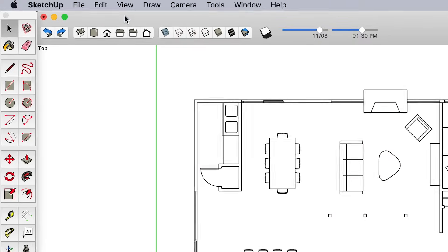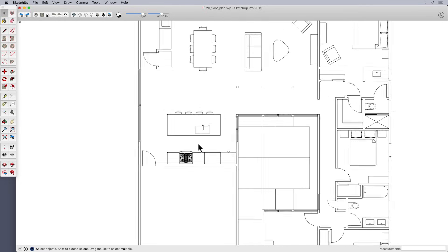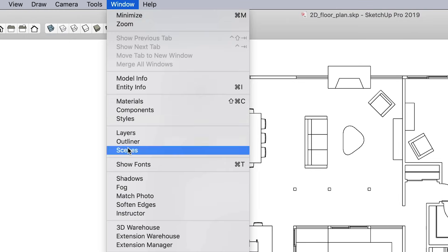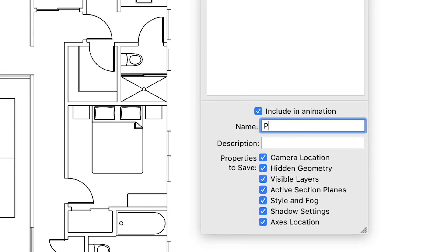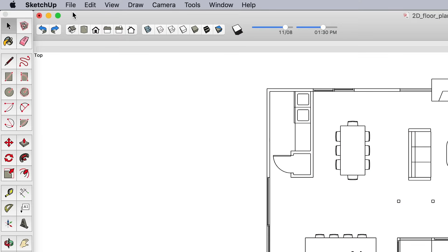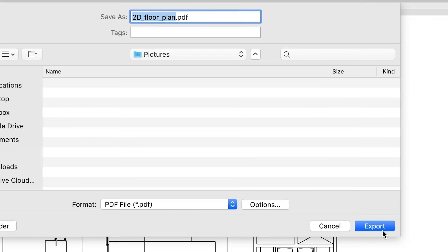Once you've settled on a style, you may also want to hide the axes. To do that, go to your top menu, select View, and click on Axes to turn them off. Now that everything is looking like you want it, be sure to save a scene. First, zoom and pan to get a good view. Then open your Scenes dialog. Mac users will find it under the Window menu option, while PC users will find it in their default tray. In the Scenes dialog, click the plus icon and name the scene. Now you can get back to that exact view any time you need. And of course, your final step will be to export an image or PDF of your floor plan. To do that, go to File Export 2D Graphic. Pick the format type you want, name it, and click Export.